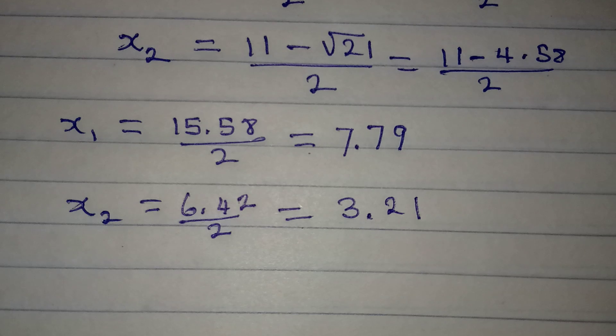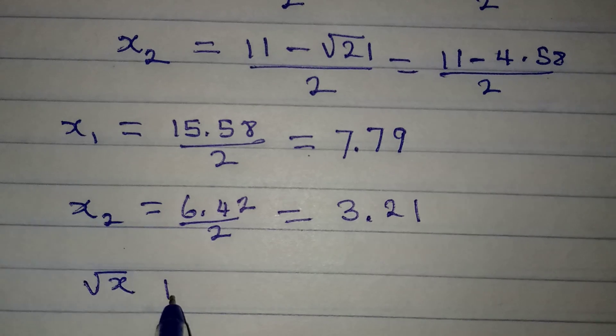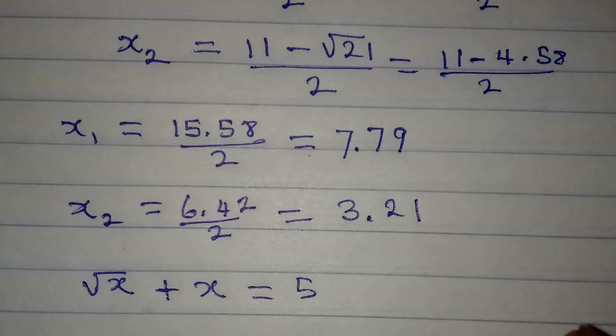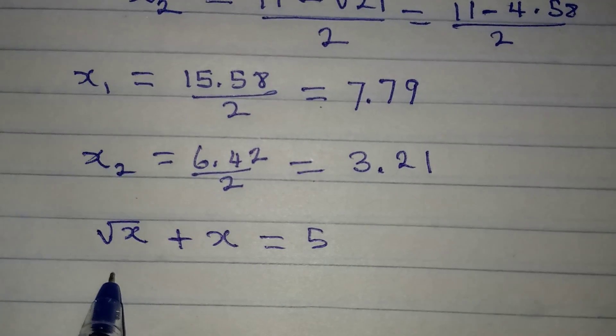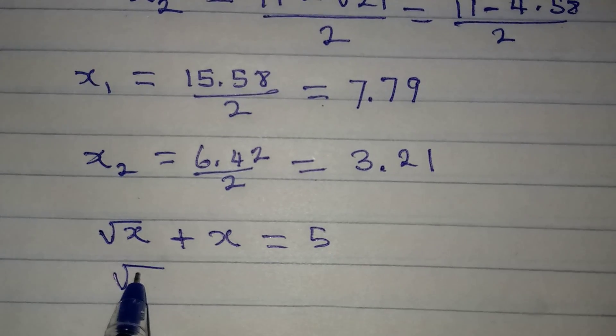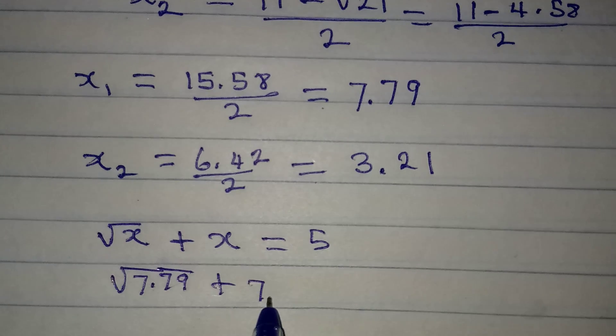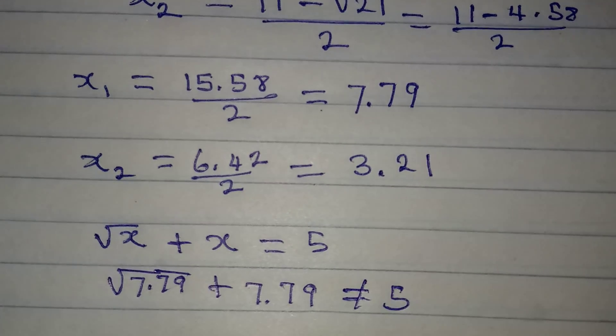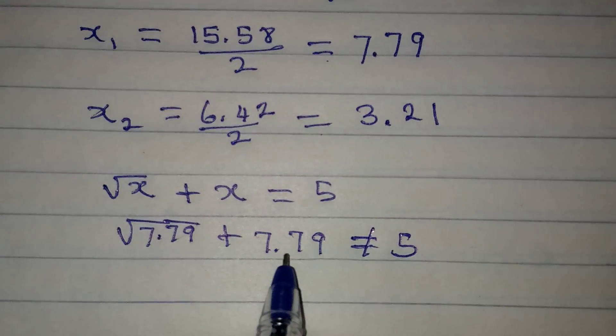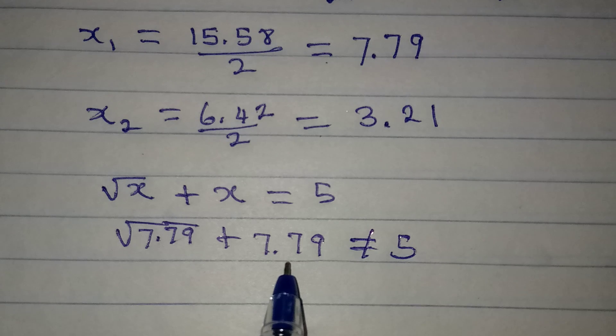Now let's check which of them will satisfy the equation. The equation is square root of x plus x equal to 5. So if I work with the first value, it means that I'm having square root of 7.79 plus 7.79. Can this be equal to 5? And the answer is no because we already have this to be more than 5, so square root of this would definitely be more than what we are looking for.